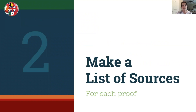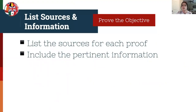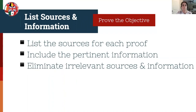The next step is to make a list of sources once you have the objectives set. List the sources you have for each proof that will actually prove the objective. Include the pertinent information found in each source and eliminate irrelevant sources and information from your list. For example, if you're using a marriage record listing the subject's age at the time of marriage to help prove that subject's birth year, it's not necessary to go into all the details covering the marriage information in this proof.